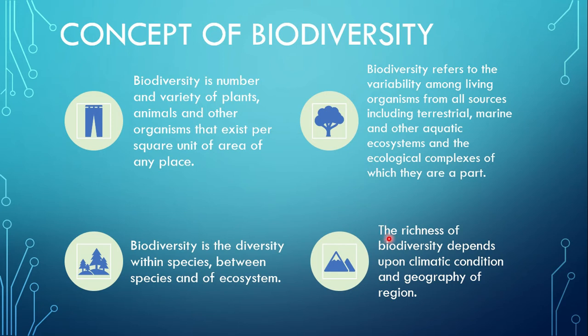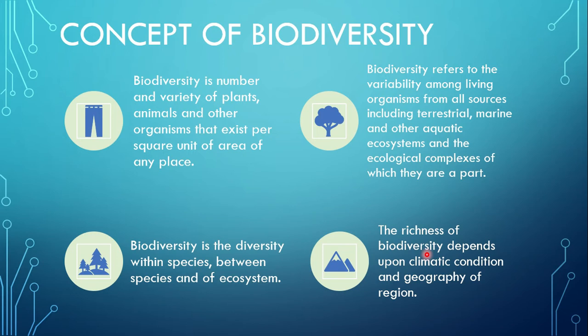The richness of biodiversity depends upon the climatic condition and geography of the region. So how rich a place is in biodiversity depends upon its climatic condition and geography — what type of climate and what type of geographical structure the region has. For example, plants and animals in the Himalayan region can be different from the Hilly region and Tarai region. The Himalayan region has extreme cold climate whereas the Tarai region has hot climate.